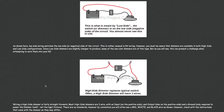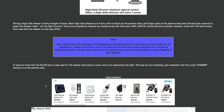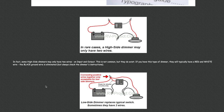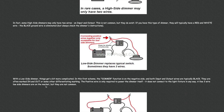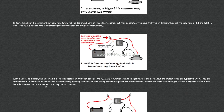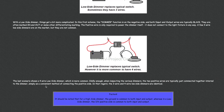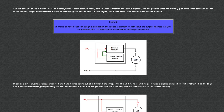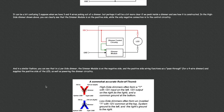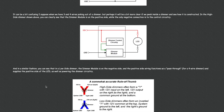I begin by describing the difference between high side and low side dimmers, which is an essential part of understanding how dimmers are wired. Next, I provide a few generic wiring options upon which high side and low side dimmers are typically wired to help you understand the differences. I then provide my Y, inverted Y, and X rule of thumb to help identify high and low side wiring.